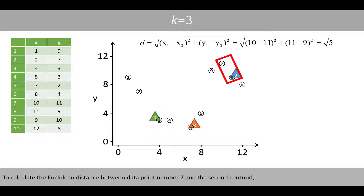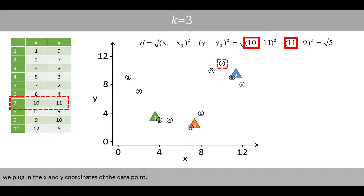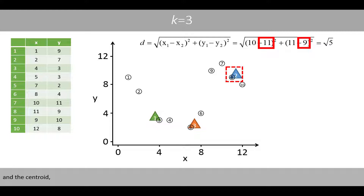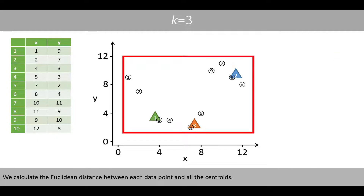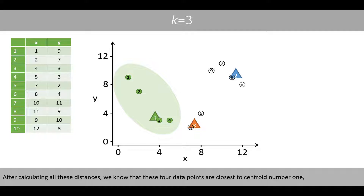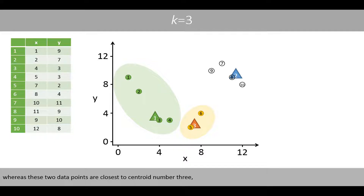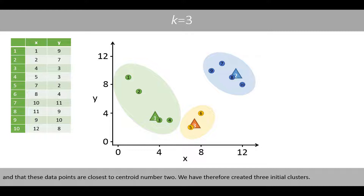To calculate the Euclidean distance between data point number seven and the second centroid, we plug in the x and y coordinates of the data point and the centroid, which results in a distance equal to the square root of five. We calculate the Euclidean distance between each data point and all the centroids. After calculating all these distances, we know that four data points are closest to centroid number one, two data points are closest to centroid number three, and the remaining data points are closest to centroid number two. We have therefore created three initial clusters.